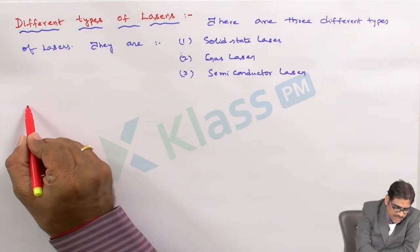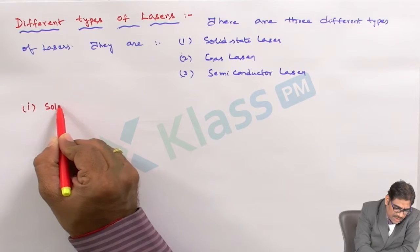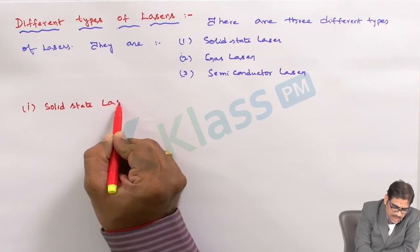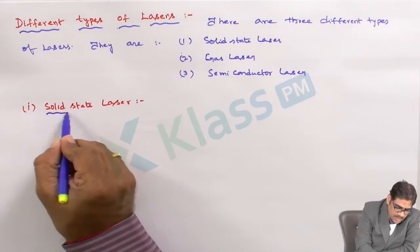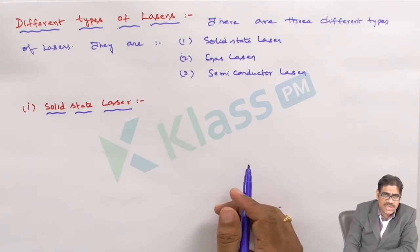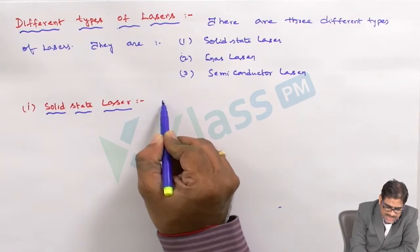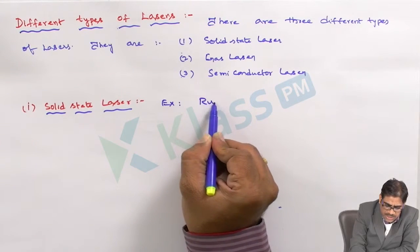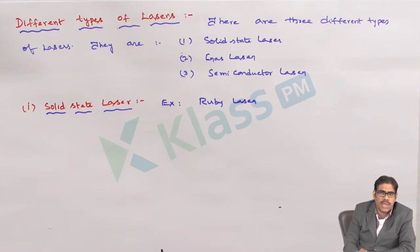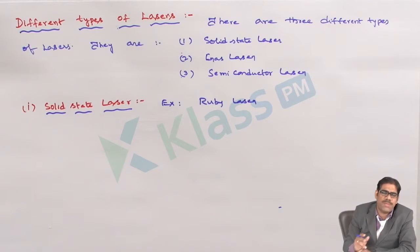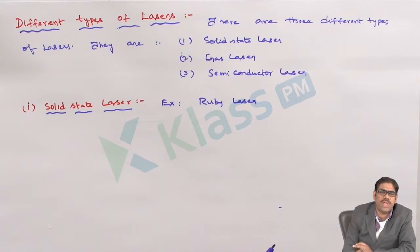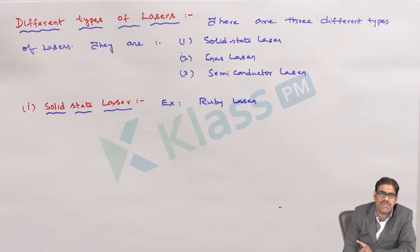Coming to the first, which is the solid state laser. In the solid state laser, we take the example of the Ruby laser. These solid state lasers are optically pumped using xenon flash lamps. One such xenon flash lamp is equipped in the working phenomenon of the Ruby laser. Let us explain the construction and working of a Ruby laser based on its characteristic property of optical pumping.